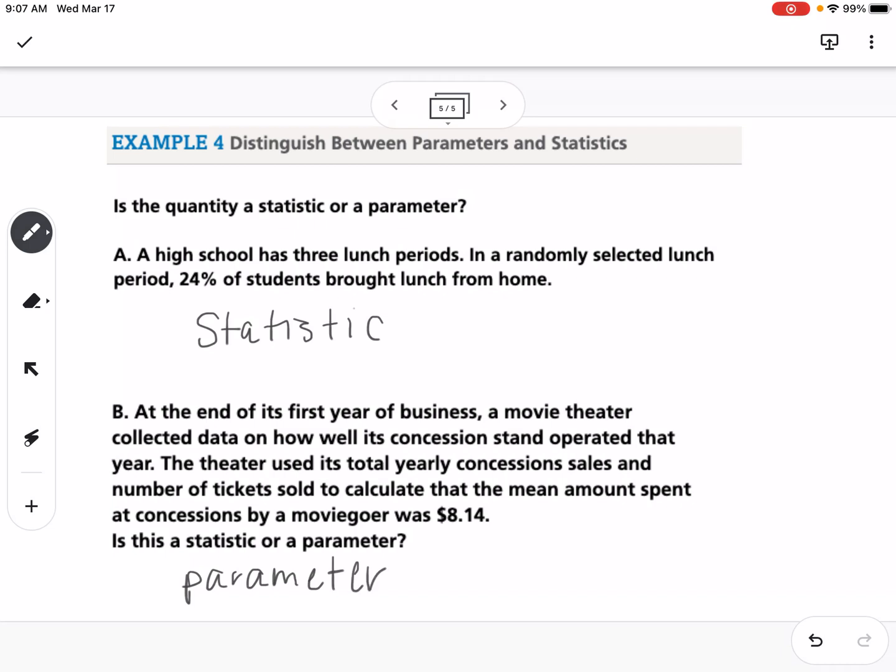If you're taking a sample and you get a value from that, it's going to be a statistic. If you're finding an average amount for all things, then that would be a parameter. So that is 11.1.